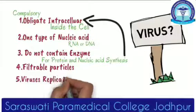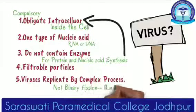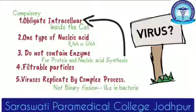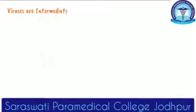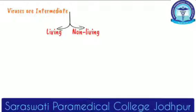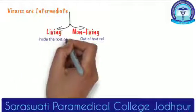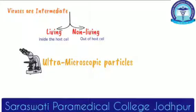They multiply not by simple binary fission like bacteria — they require a complex multiplication process. Virus is an intermediate between the living and non-living, because they are just like dead particles when outside a living host, but when inside a host cell they become alive. Viruses are very small and not seen under the light microscope, so they are also called ultramicroscopic particles.